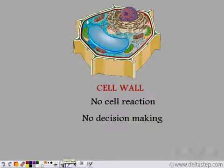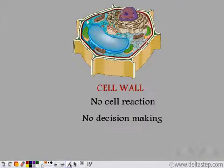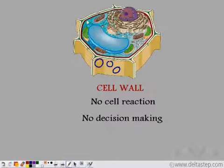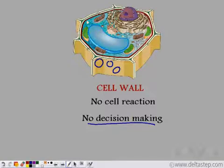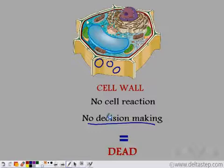Similarly, the cell wall is just a deposition of cellulose. No cell reactions take place in the cell wall. There are a lot of pores in the cell wall, and these pores allow any molecule to flow through them. So the cell wall does not take part in any decision making — it allows all molecules to flow through and does not have a screening mechanism. Since it does not take part in any decision making, the cell wall is a dead component of the cell.